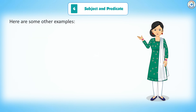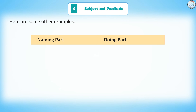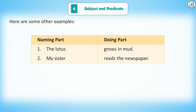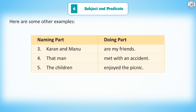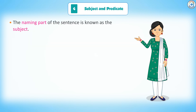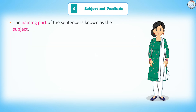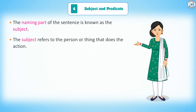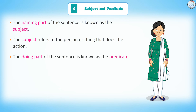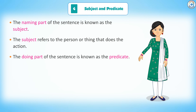Here are some other examples. The doing part of the sentence is known as the predicate.